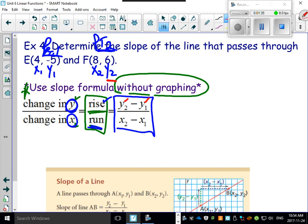y2 is 6 minus y1, y1 is negative 5, so minus a negative 5. Watch out for those minus-minus ones - they're going to come back and bite you. x2 is 8, x1 is 4, so 8 minus 4.